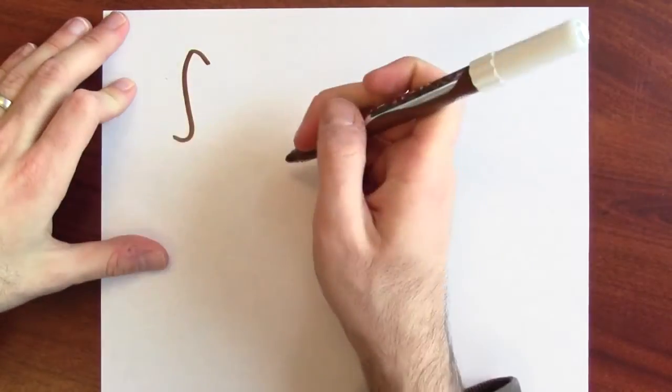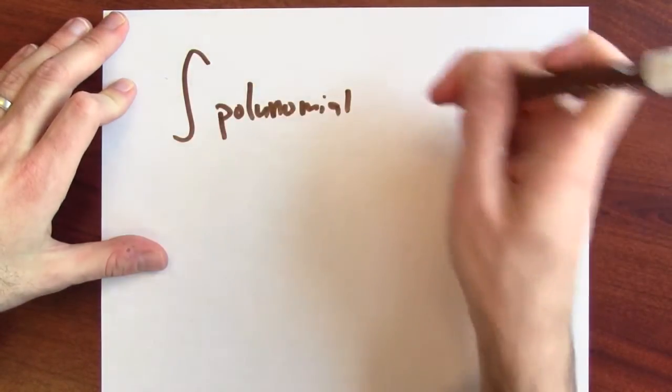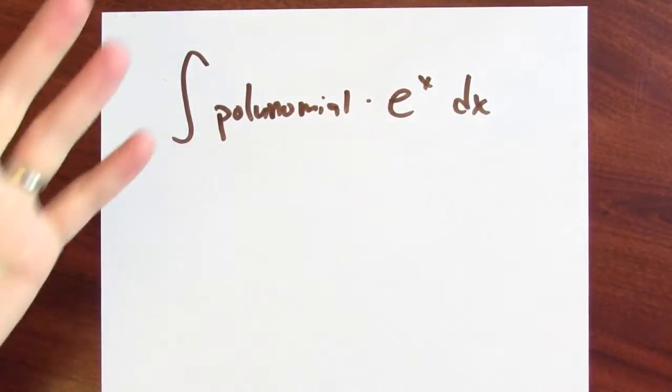Now, we can use the same trick to attack similar integration problems. For example, let's say you want to anti-differentiate some polynomial in x times e to the x. You could do this with parts. Well, how?